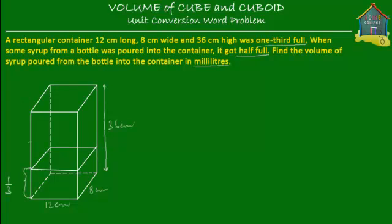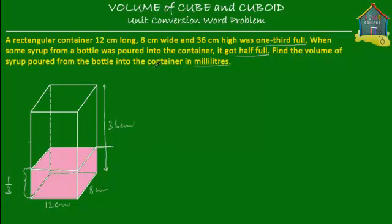Let's drop some color into it to show that this portion is occupied. Now, if one-third of this is full, what is this height or depth over here? Well, it's one-third of the height, which is 36 cm. So it's nothing but 12 cm. This depth is equal to 12 cm.